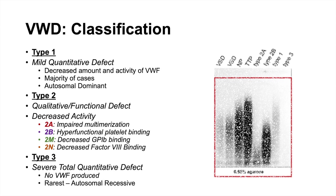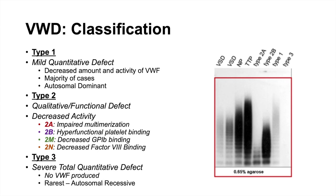When looking at an agarose gel examining the different multimers of von Willebrand factor, we can visualize the types. Type 2a shows impaired multimerization — the largest multimers are missing, leaving only the smallest. Type 2b is normal but binds platelets inappropriately. Type 1 shows a mild quantitative defect with lightening of the bands. Type 3 shows nothing — no von Willebrand factor formed at all.